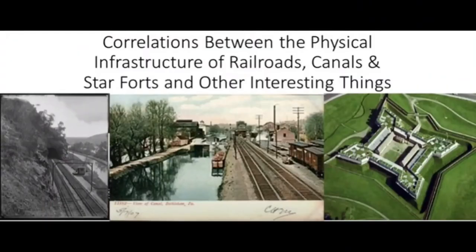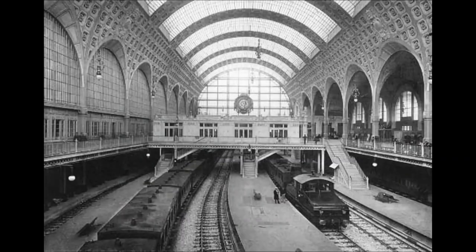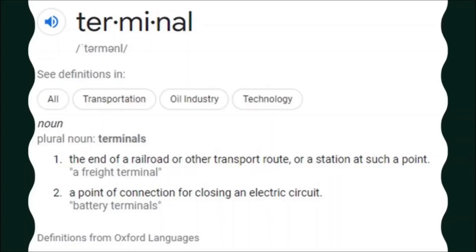When I was researching correlations between the physical infrastructure of railroads, canals, and star forts, I ended with a photo captioned 'electric trains operating in the Gare d'Orsay circa 1900.' Electric trains. The Gare d'Orsay Railroad Terminal was said to have opened in Paris in 1900. This led me to look up the definition of the word terminal for the first time. There are two definitions of terminal: one is the end of a railroad or other transport route; the other is a point of connection for closing an electric circuit. There is that electrical circuitry terminology again.